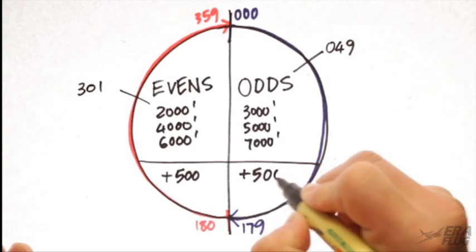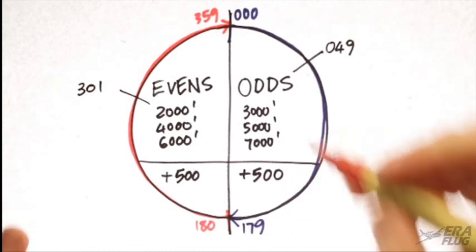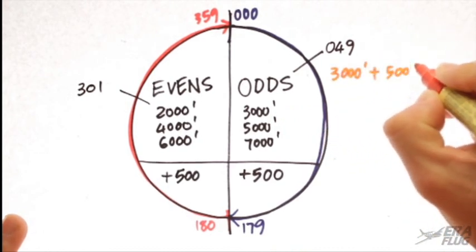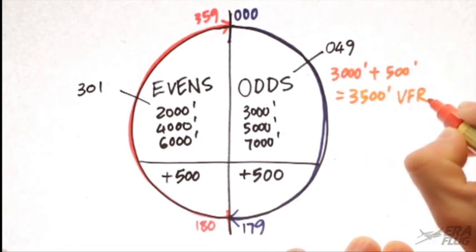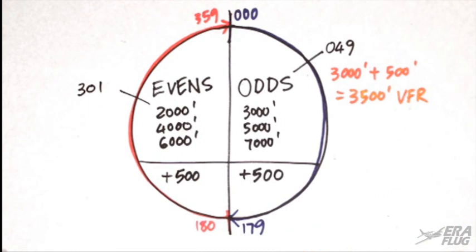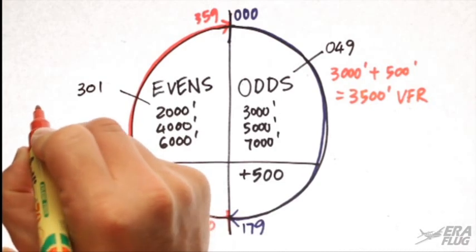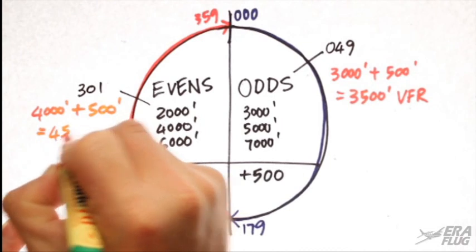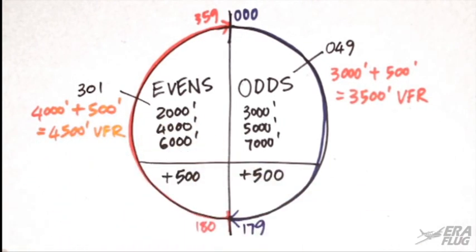Our examples now become on a track of 049 magnetic. We have an altitude of 3,000 feet. We add 500, and our new altitude is 3,500 feet VFR. And similarly, our magnetic track of 301 becomes 4,000 feet plus 500. Our new altitude is 4,500 feet VFR.